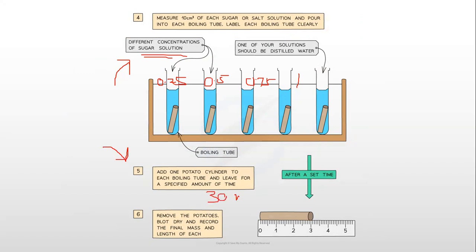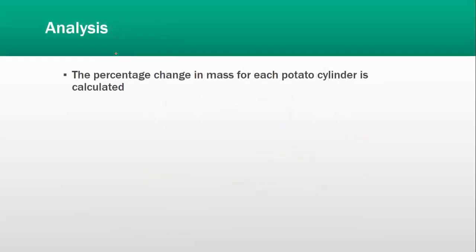Add 1 potato cylinder to each boiling tube and leave for a specified amount of time, 30 minutes. Remove the potatoes, blot dry, and record the final mass of each.